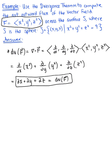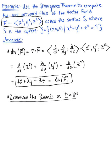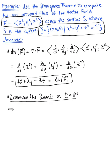We do not have a constant here, so we're not going to be able to use that shortcut. So we want to think about what the bounds of our solid region are. The solid region is bounded by the sphere with radius 3, and since we have a solid sphere, it's going to be easiest to use spherical coordinates. So we need the bounds for spherical coordinates.